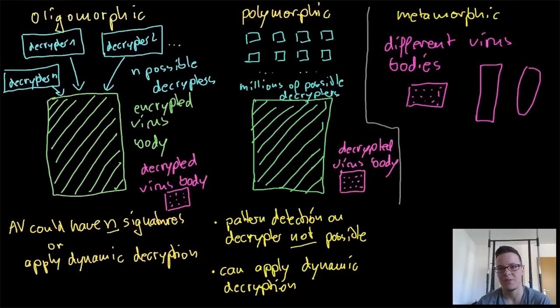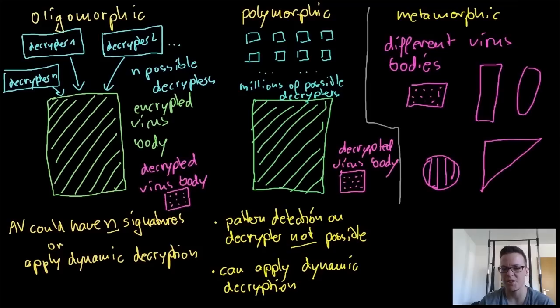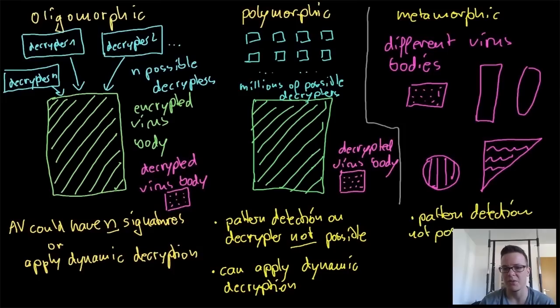We have different shapes for this, and it achieves that by changing the execution flow, by adding junk instructions, and so on. There are different possibilities to do that, and you cannot apply pattern detection here. The only thing you can do is use algorithmic detections and heuristic detections, so it's quite hard to detect them, but it's also very hard to write those kind of viruses.